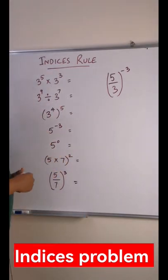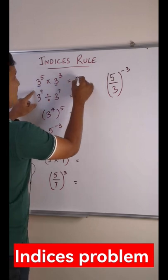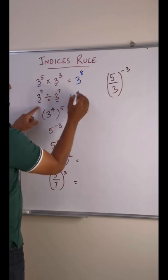How to do some questions based on indices rule. If there is a multiplication and the base are same, you add the power. 5 plus 3 is 8. If there is a divide and base are same, you subtract it.